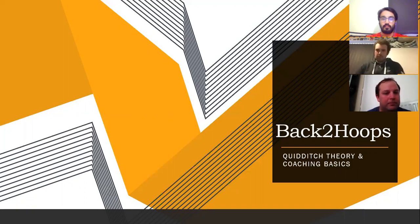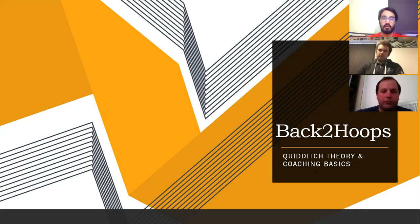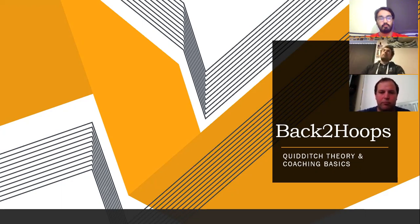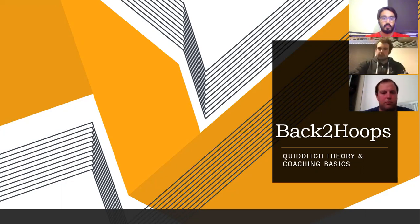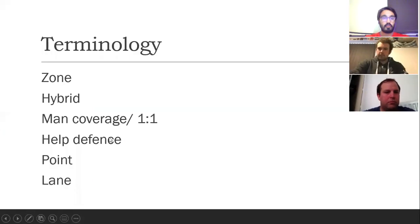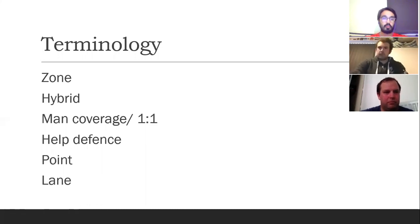Each of these videos and resources is going to focus on one aspect of Quidditch. Today we're starting with a defense system called Compact Defense. It's probably the most prevalent one amongst teams in the UK at the moment and has been since it came to prominence here in the 2015-2016 season. To make sure we're all on the same page, we're going to go through some key terms.